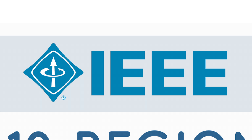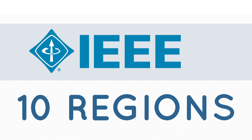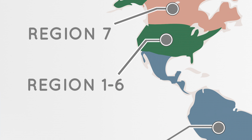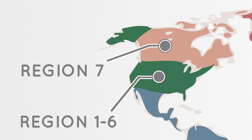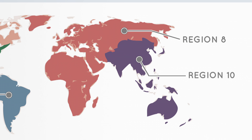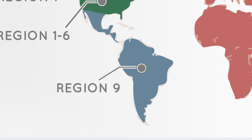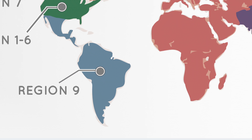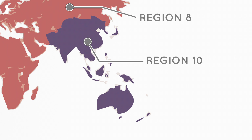The growth of IEEE led to a division into ten geographical regions. USA alone, the birthplace of IEEE, encompasses regions 1 to 6. Canada is designated as region 7, whereas region 8 includes Europe, Africa and Middle East. Finally, region 9 includes all countries of Latin America and region 10 covers Asia and Pacific countries.